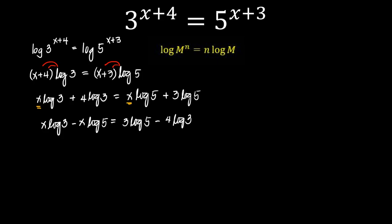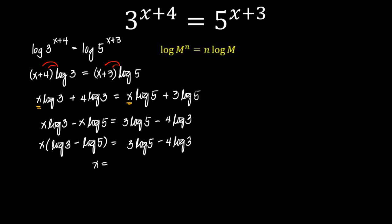And then we try factoring out the x, giving us x times the quantity logarithm of 3 minus logarithm of 5, and on the right side it's simply 3·log5 minus 4·log3.